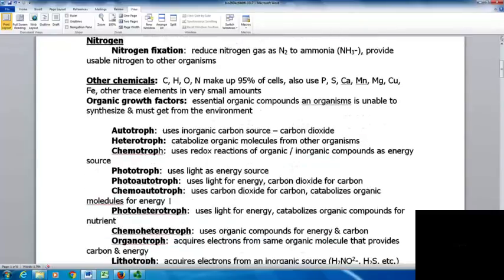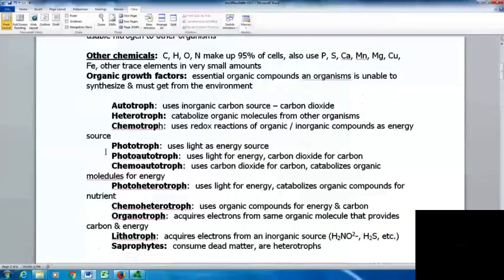We have different categories for the type of feeder that an organism is. An autotroph uses inorganic carbon sources like carbon dioxide - they're able to make their own food. Heterotrophs have to catabolize organic molecules from other organisms. A chemotroph uses redox reactions of organic or inorganic compounds as an energy source. Phototrophs use light as an energy source. A photoautotroph uses light as energy and carbon dioxide as a carbon source.